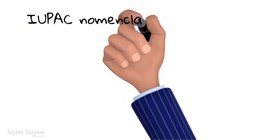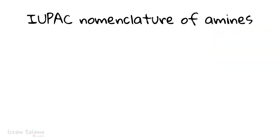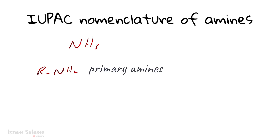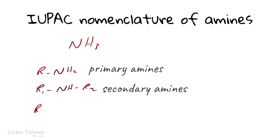In this video I will explain IUPAC nomenclature of amines, but first let me explain what amines are. Amines are organic compounds formed when at least one of the hydrogens in ammonia is replaced by an alkyl group. If one hydrogen is replaced, it is called a primary amine. If two hydrogens are replaced, it is called a secondary amine. If three hydrogens are replaced, it is called a tertiary amine.